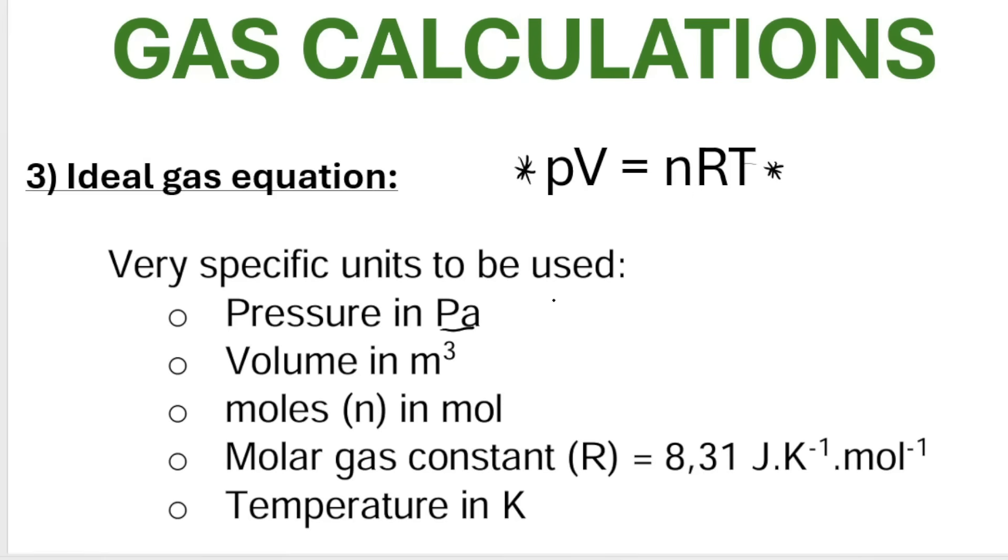And one of the most common ones that you'll get is pressure given to you in kilopascals. So just remember, one kilopascal is 1000 pascals. Volume must be in cubic meters. We will speak about how to convert volume to cubic meters when that pops up. Moles is N, number of moles. And often you have to calculate N by first using another formula. R is the molar gas constant. It's always going to be 8.31. And this is given on your formula sheets. And temperature must be in Kelvin.